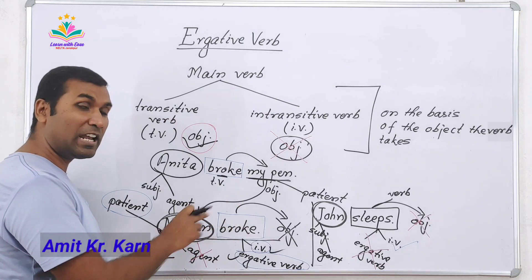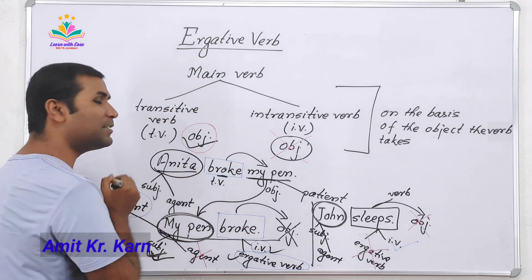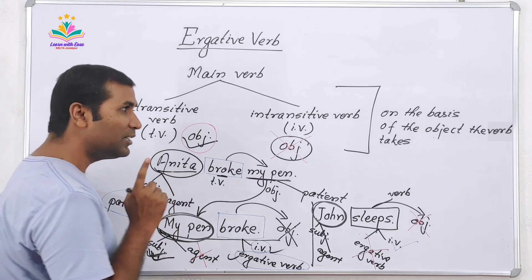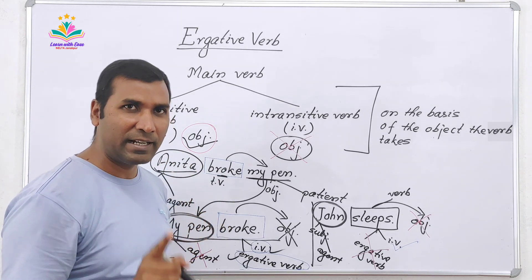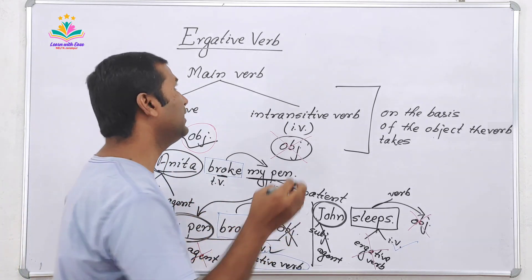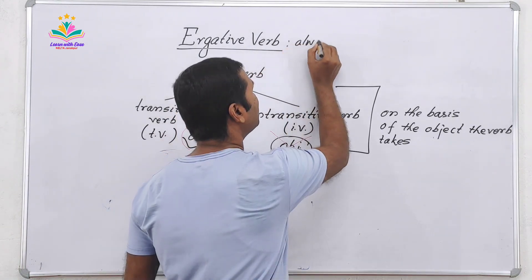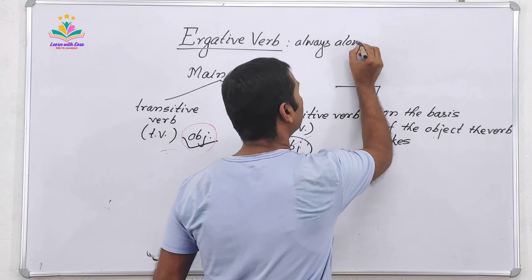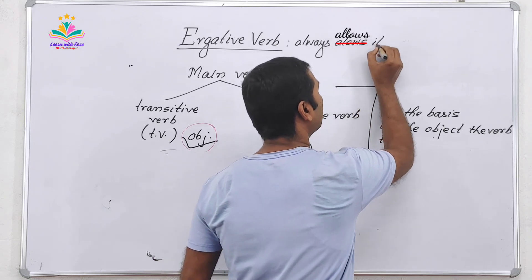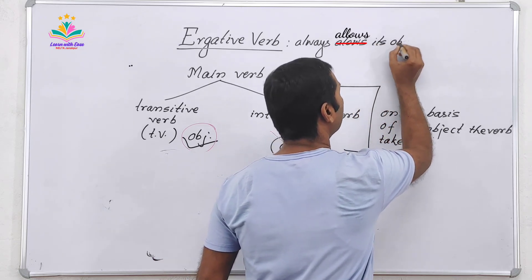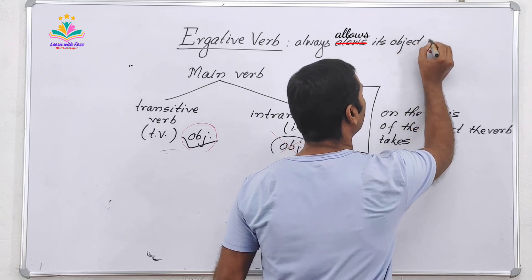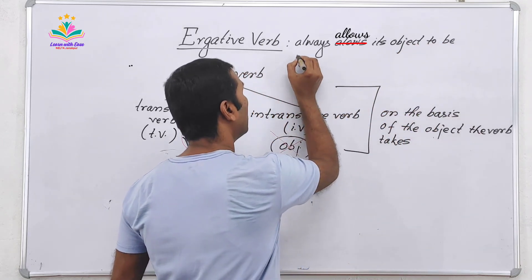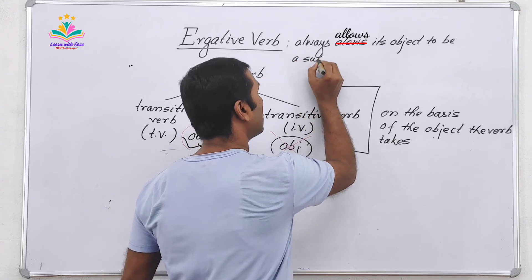So in simple language, an ergative verb allows its object to be the subject of another sentence. For example, every ergative verb follows this pattern.